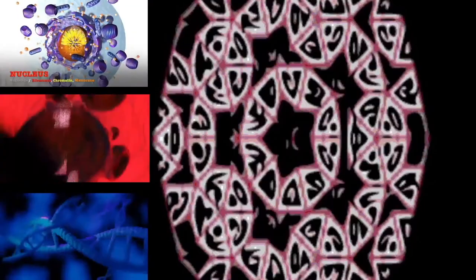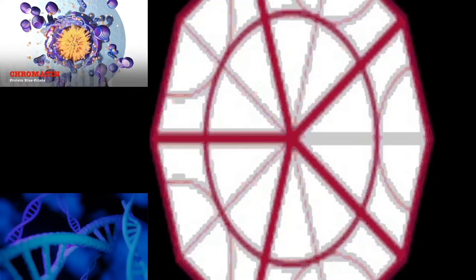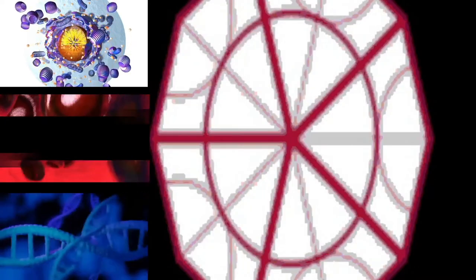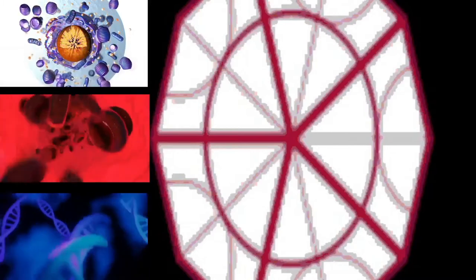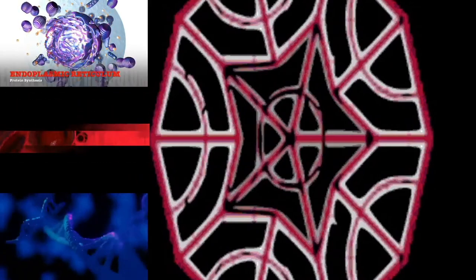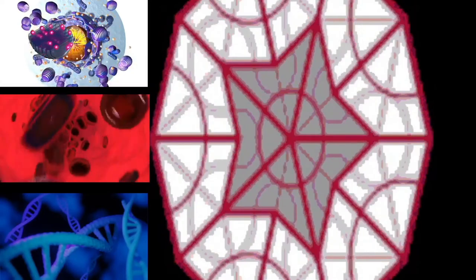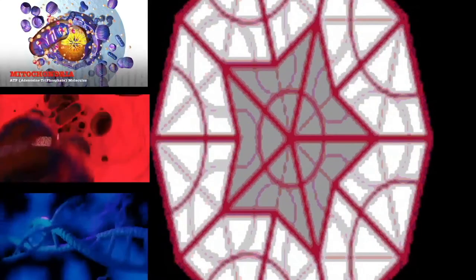However, chromosomes are replicated only during the S phase. Thus, a cell grows (G1), continues to grow as it duplicates its chromosomes (S), grows more and prepares for mitosis (G2), and finally divides (M) before restarting the cycle. All these phases in the cell cycle are highly regulated by cyclins, cyclin-dependent kinases, and other cell cycle proteins. The phases follow one another in strict order, and there are checkpoints that give the cell cues to proceed from one phase to another.